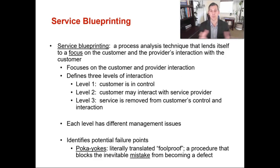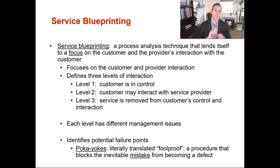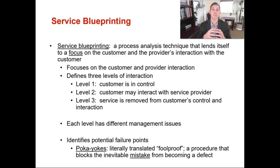For example, when I got my oil changed, they had a checklist they followed methodically to make sure everything was done correctly — that my wipers were on, my oil cap was back on, my tires were back on and at the right PSI. They were verbally communicating with each other, they all had checklists, and they had different poka-yokes in process to make sure there were no mistakes. A poka-yoke is literally translated as 'foolproof' — it's a procedure that blocks inevitable mistakes from becoming a defect. You can build poka-yokes into your service process just like you can for a manufacturing process.